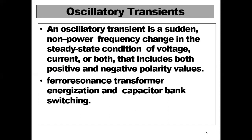An oscillatory transient is a sudden non-power-frequency change in the steady-state condition of voltage, current, or both, that includes both positive and negative polarity values. In an oscillatory transient, the change in voltage and current occurs suddenly in both polarities.